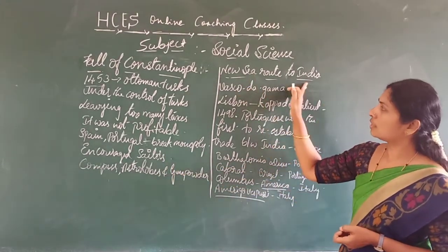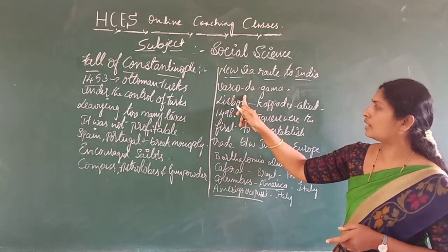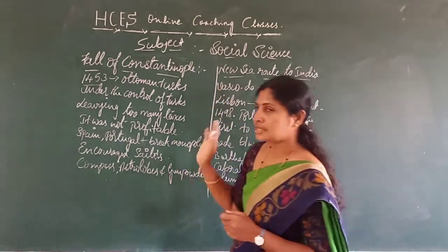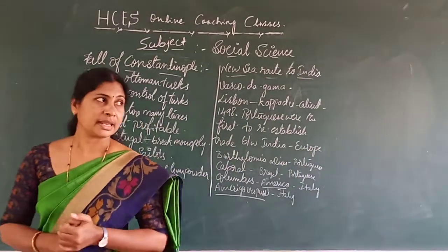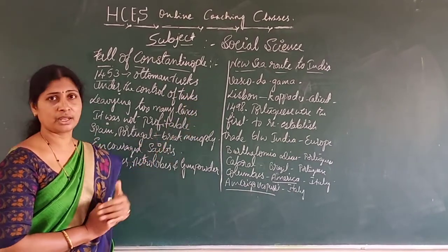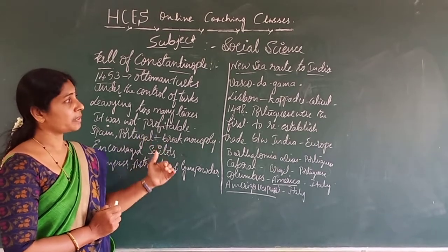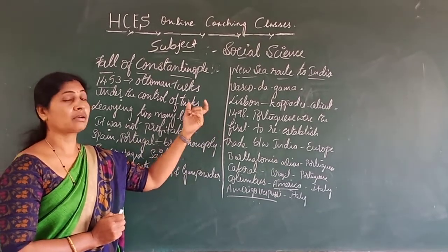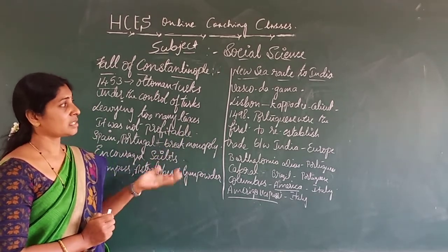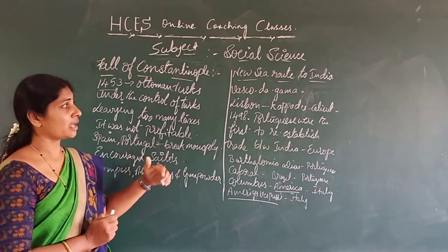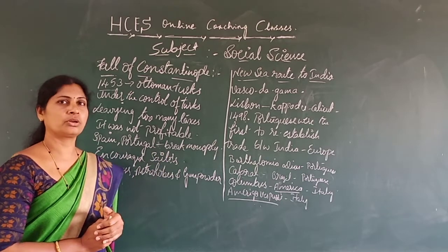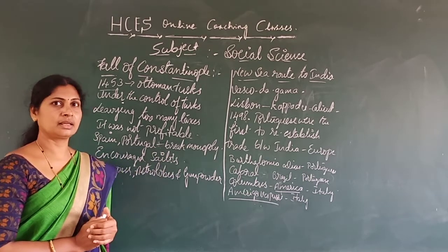Other new lands were also found because of the encouragement given to sailors by European countries. The new sea route to India was found by Vasco da Gama, a Portuguese sailor, who reached India in 1498. After this, we are going to learn in the next class who followed Vasco da Gama. The Portuguese entered India and had a monopoly on trade until other Europeans arrived. Followed by the Portuguese, the Dutch, English, and French also entered India. How they came, what their major trading centers were, and how they ruled India — everything will be discussed in the next class. Until then, have a nice day. Bye.